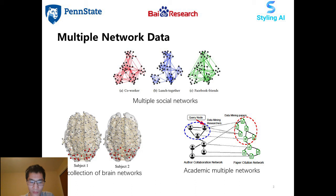As another example from neurobiology, brain networks are usually built from fMRI data. In a brain network, each node indicates a region and an edge represents functional connectivity between two regions. In the third example, the academic multiple networks consist of a collaboration network of researchers and a citation network of papers, where an edge denoted by a dotted line indicates the relationship between a researcher and a paper.